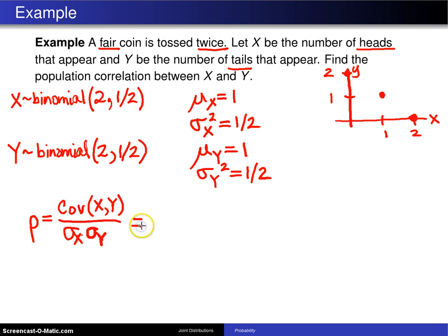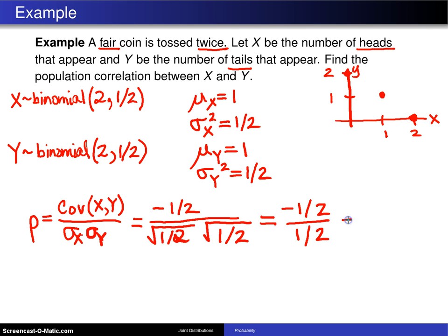The covariance of X Y was computed in a previous example and that turned out to be negative 1 half. Sigma sub X is the standard deviation of X and that will be the square root of 1 half. Sigma sub Y is the standard deviation of Y and that will also be the square root of 1 half. So what you get here is negative 1 half divided by 1 half and that ratio will be negative 1.